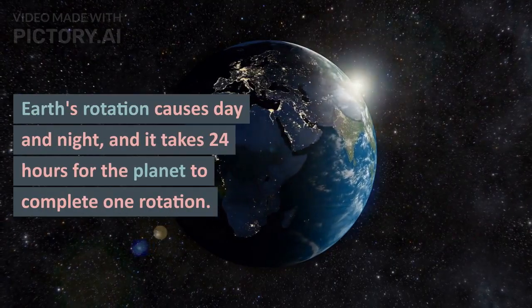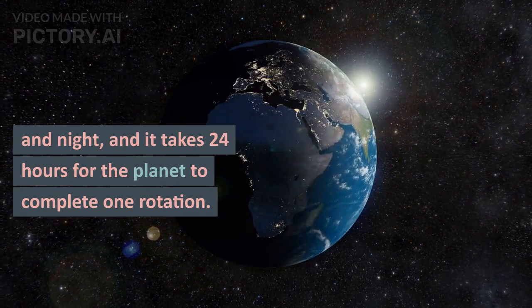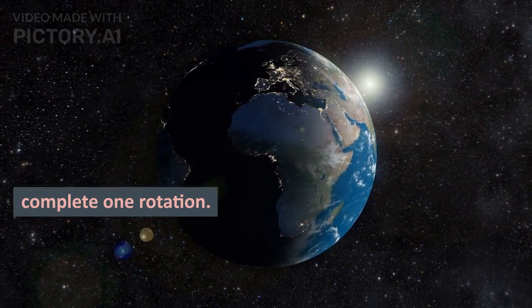Earth's rotation causes day and night, and it takes 24 hours for the planet to complete one rotation.